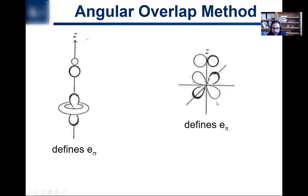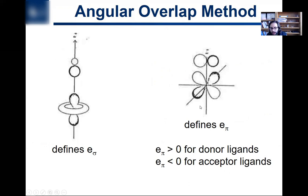So that defines E-sigma. E-pi is, well, it's pi bonding, so it has to do with two lobes interacting. Remember, that's the definition of what a pi bond is. And E-pi is going to be greater than zero for a donor ligand and less than zero for an acceptor ligand. Why is that? That has to do with all of our discussion about the MO diagram, and MOs going up or down depending upon your pi-accepting or pi-donor ligand. So refer back to what I said earlier in this video and in the previous video, if you're confused about that.